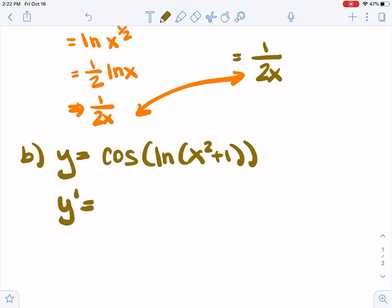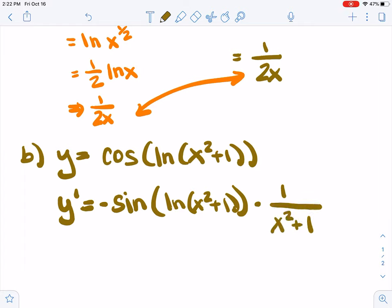So y prime, the derivative of cosine is negative sine, and we'll evaluate that at the same place, times the derivative of this inside function. So you want to multiply by the derivative of that, which is 1 over x squared plus 1. And then we want to multiply by the derivative of the inside function for that previous derivative, which is 2x. So that's our answer for this one.